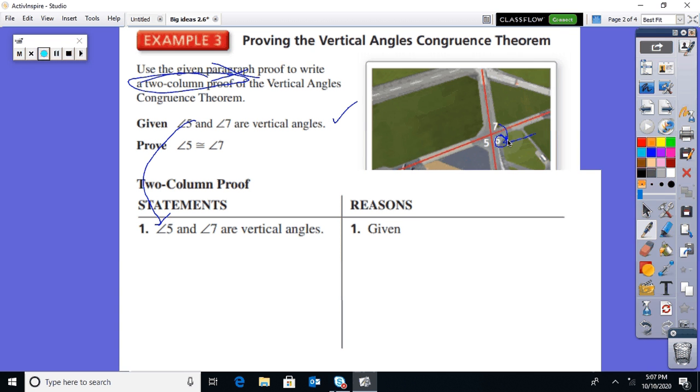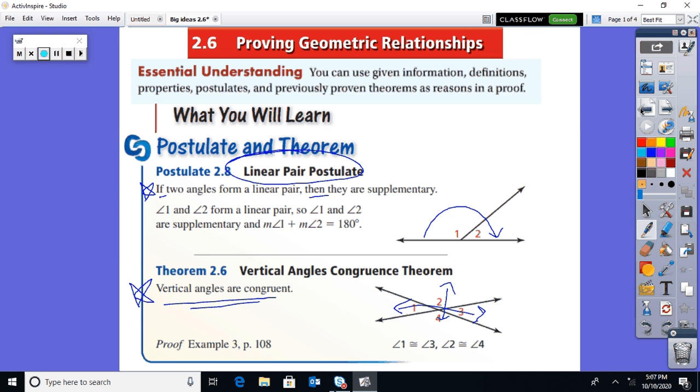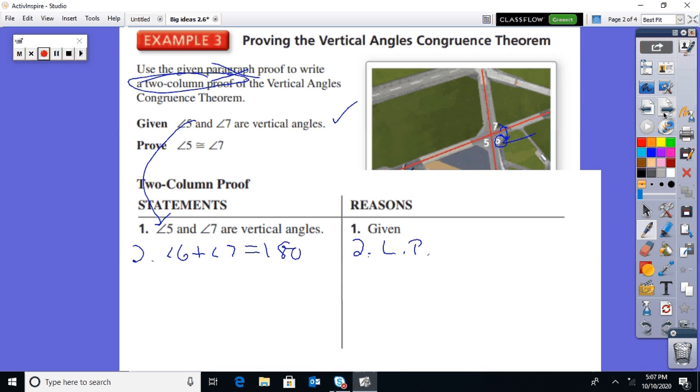The angle 6 is there to help us out. What do you guys know about 6 and 7? Well, I know that angle 6 plus angle 7 equals 180. Why? Because they're a linear pair. LP, that's all you've got to put. Linear pair postulate.